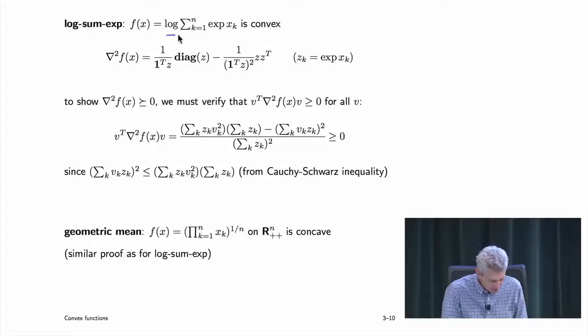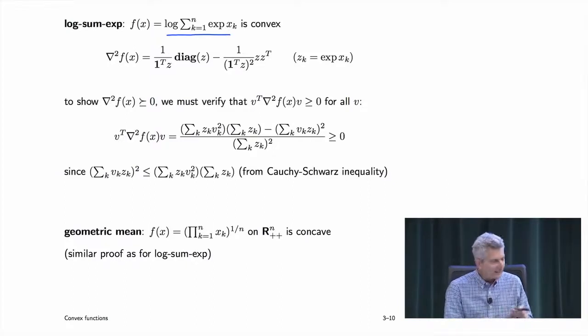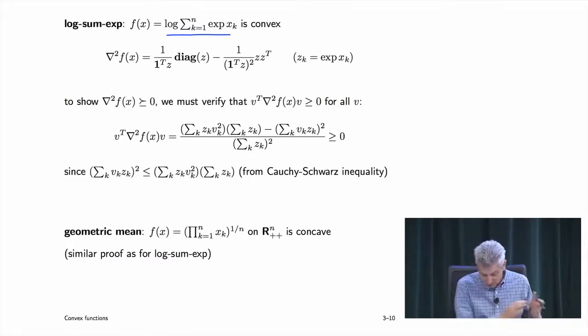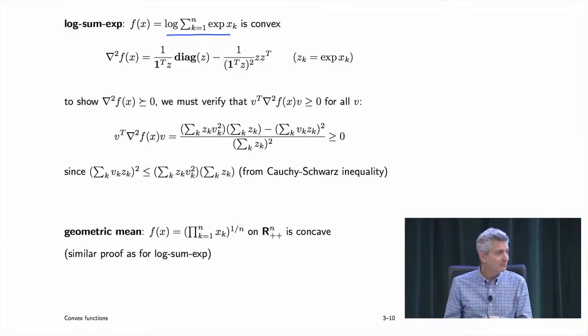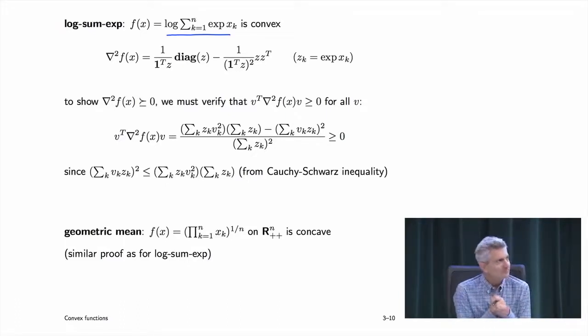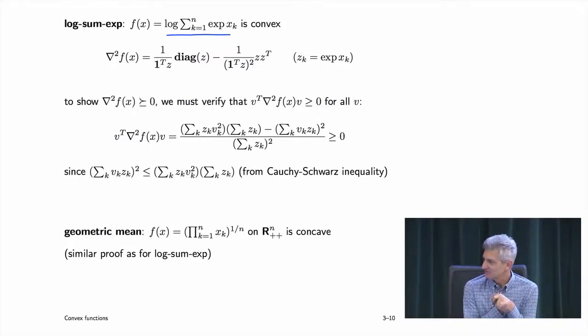Here's log-sum-exp: log(sum of exponentials). Before getting into it, let me give a rough idea of what this function is. In electrical engineering, it's the power combining formula in decibels. You have signals in dBm — decibels are logs of power levels. You form the exponential to convert to power, add the powers (sum exp), then take the log to convert back to decibels. Everyone in EE knows this as the dB combining formula.